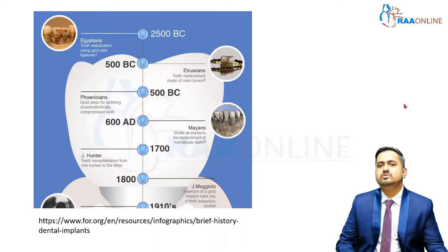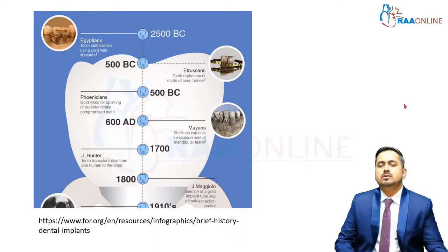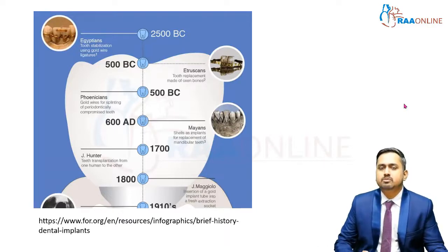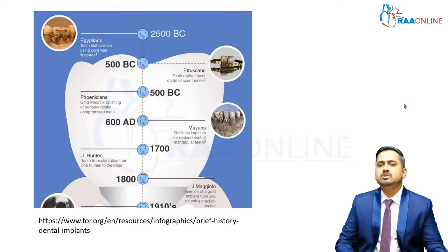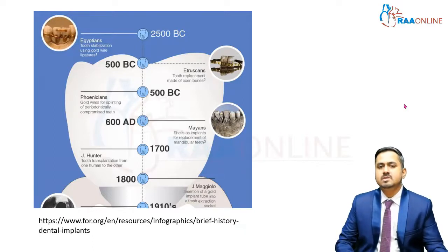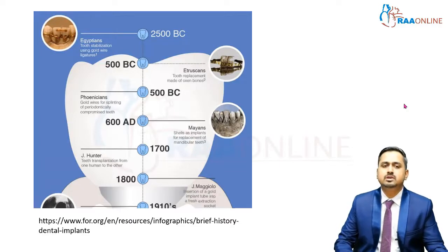Ox bones were also used. Then again, in 500 BC, they tried gold wires to stabilize periodontally weakened teeth. The first use was repositioning extracted teeth, whereas here gold wires were used to stabilize periodontally weakened teeth. In the Mayan era, seashells were converted into tooth shapes and used as implants.